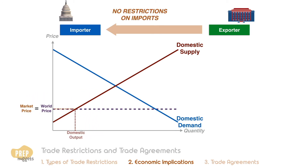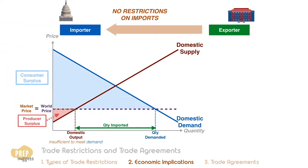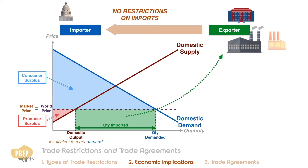Since the domestic producers cannot produce enough to meet demand at this price point, the remaining quantity is imported. The domestic producer surplus is this portion here, and consumer surplus is this large portion here. This portion here goes to foreign suppliers.